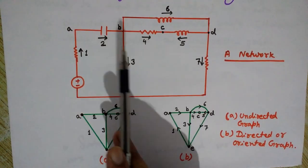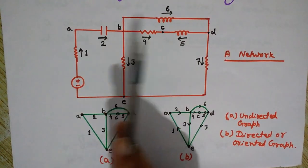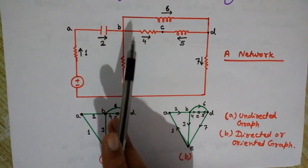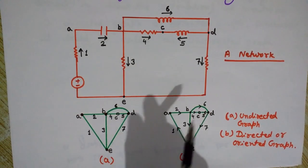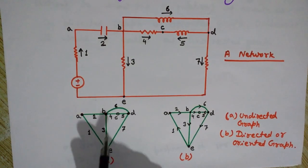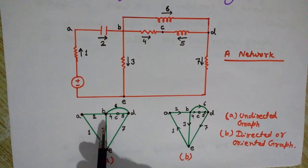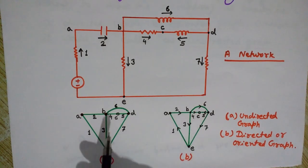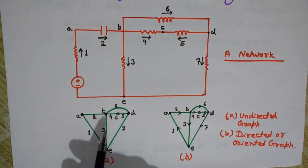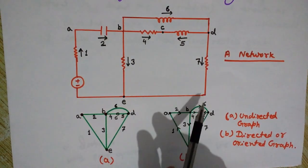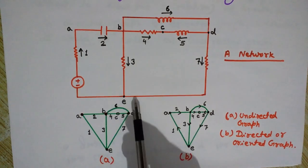So first let's understand the definition with the help of this network. A graph or a linear graph is a collection of nodes and branches. As you can see, this is a network and we have drawn graphs for this network. This is the undirected graph — undirected means we have not shown any directions or orientations in this graph. The other one is the directed graph as the directions are mentioned. So a graph is a collection of nodes and branches.